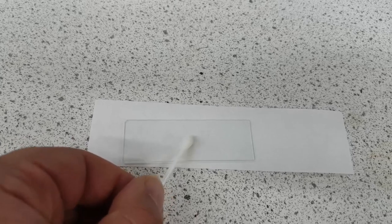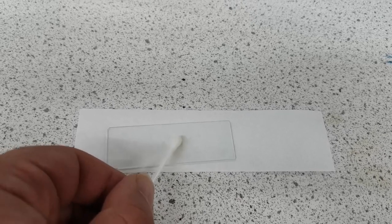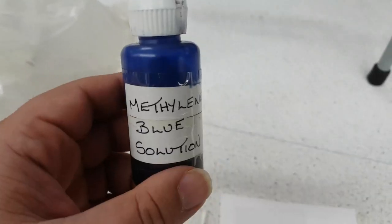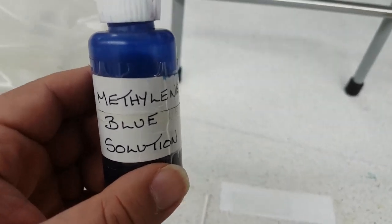Then what we need to do is we need to add a dye so that we can actually see the cheek cells under the microscope. So the dye that we are going to be using is methylene blue solution.